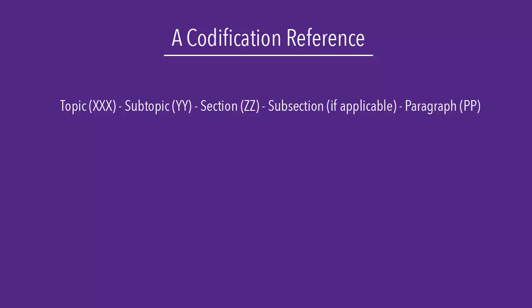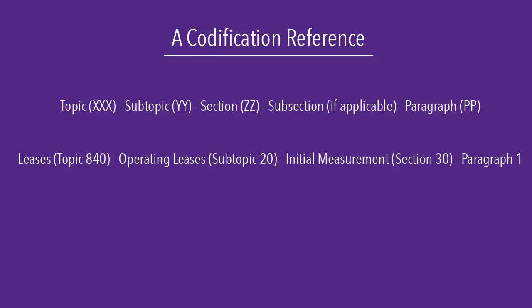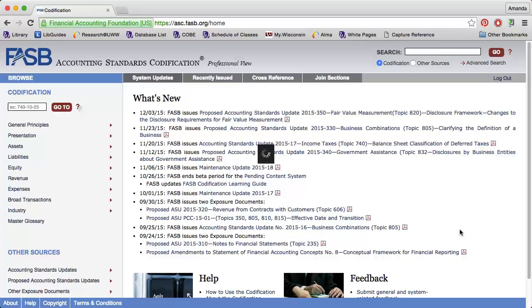So if we were looking at the codification for leases, operating leases, initial measurement, paragraph 1, our final reference would say ASC — for accounting standards codification — 840-20-30-1.